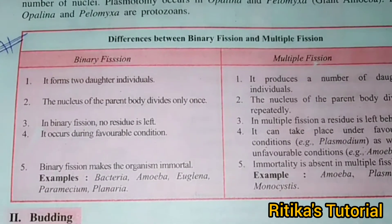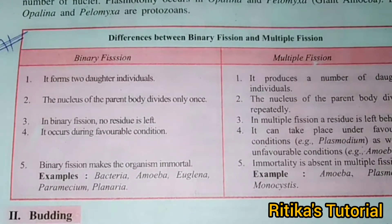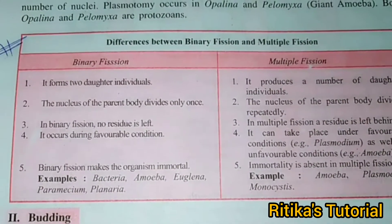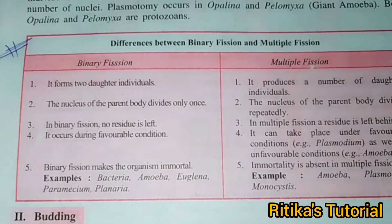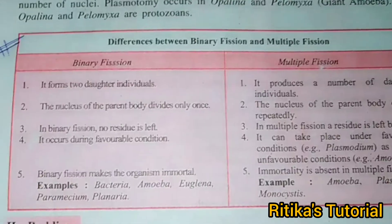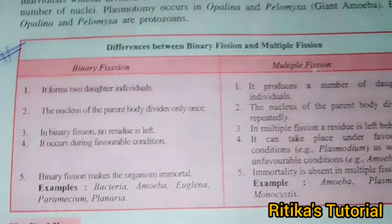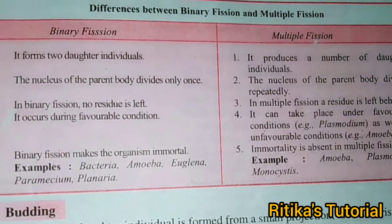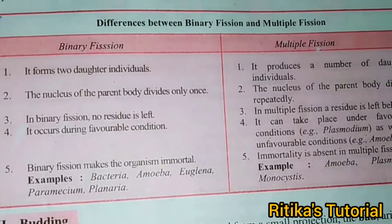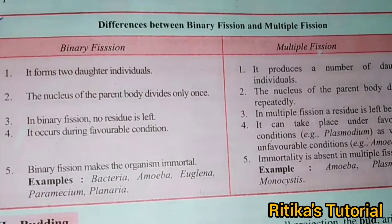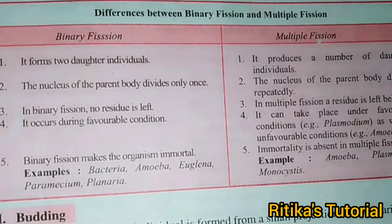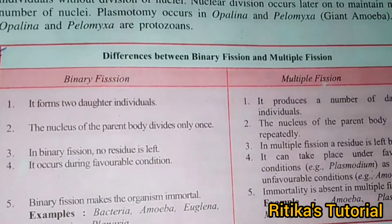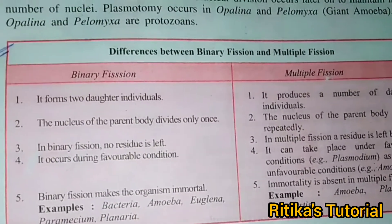Whereas multiple fission can occur under both favourable and unfavourable conditions. For example, under favourable conditions, multiple fission occurs in Plasmodium, which is the malaria-causing organism. And if there are unfavourable conditions, Amoeba undergoes multiple fission.